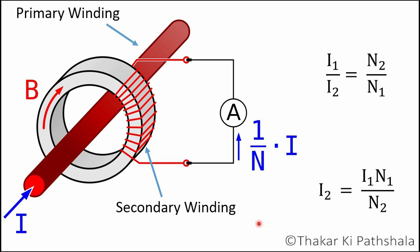Sometimes manufacturers indicate a current ratio to represent the range of the transformer. For example, a 500:5 rating indicates that this transformer steps down current from primary to secondary by a ratio of 500 to 5 — meaning if we measure 5 amperes on the secondary side, there should be 500 amperes flowing in the main circuit.